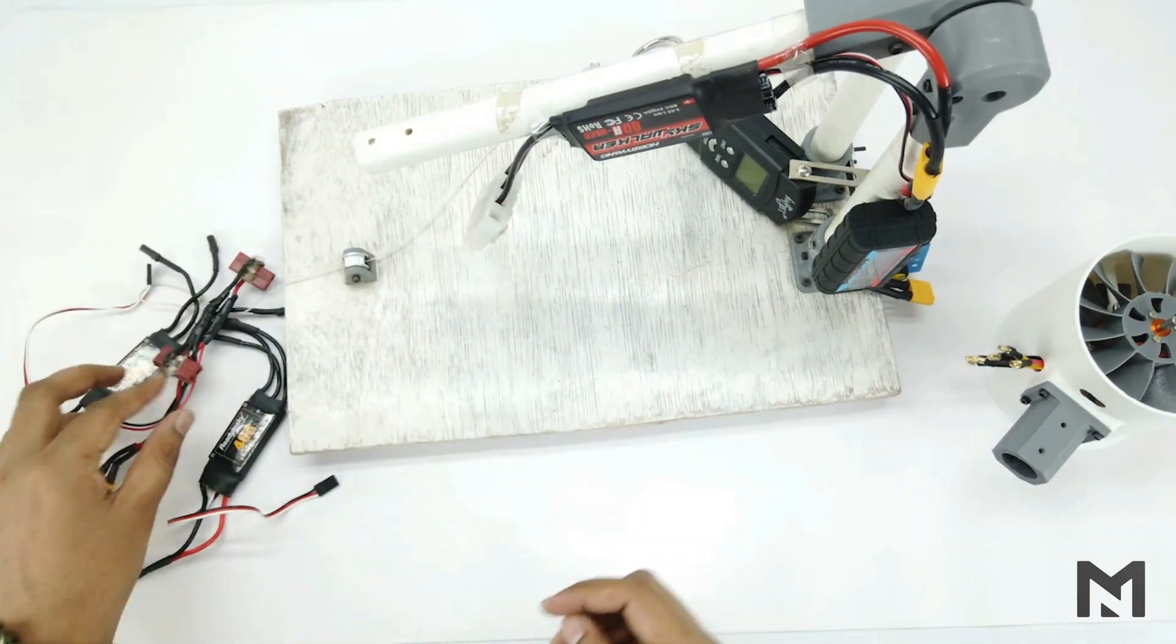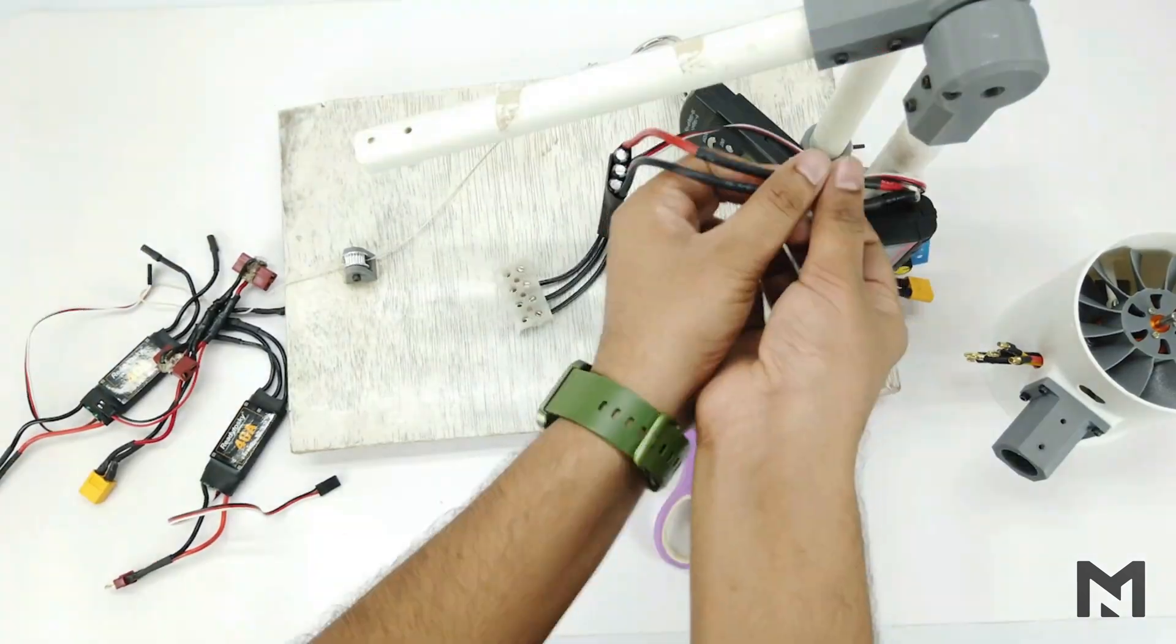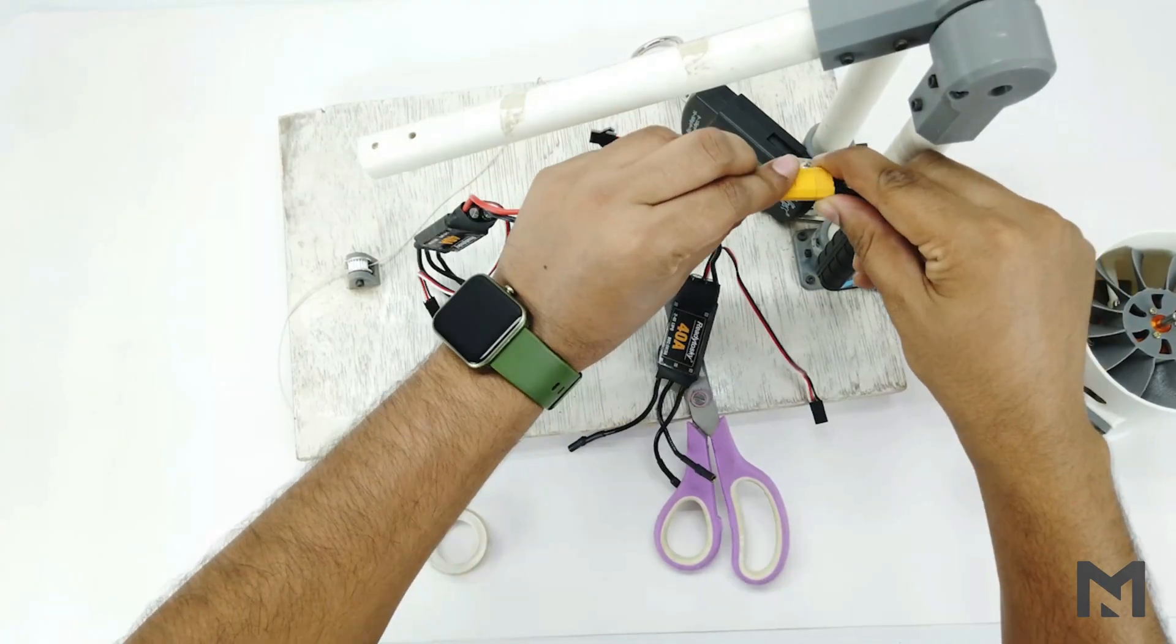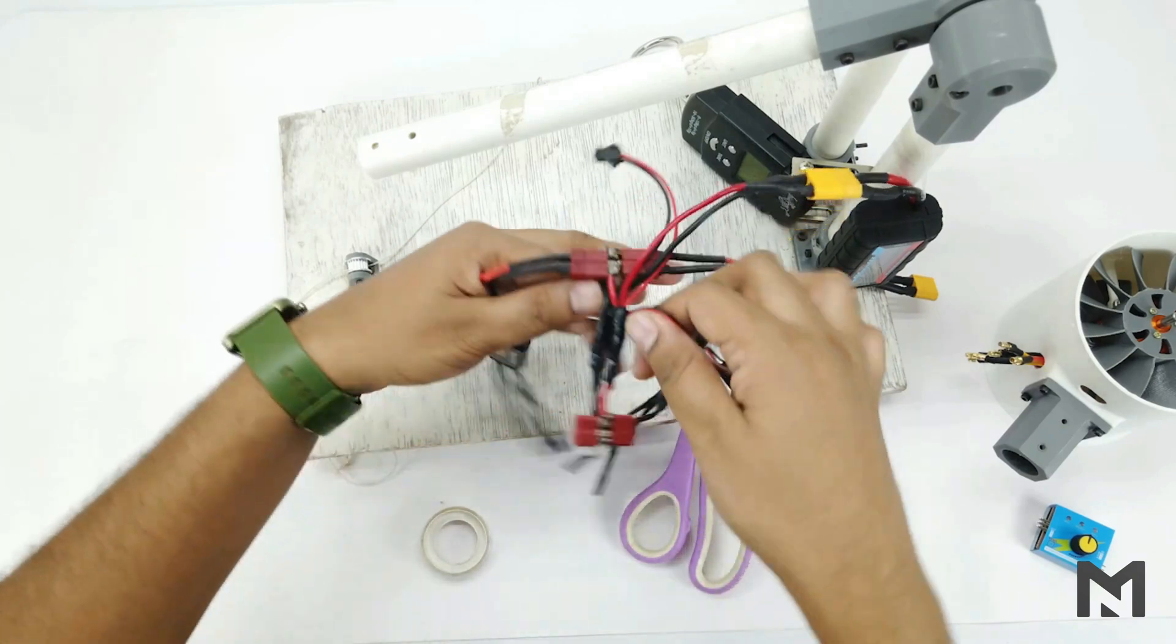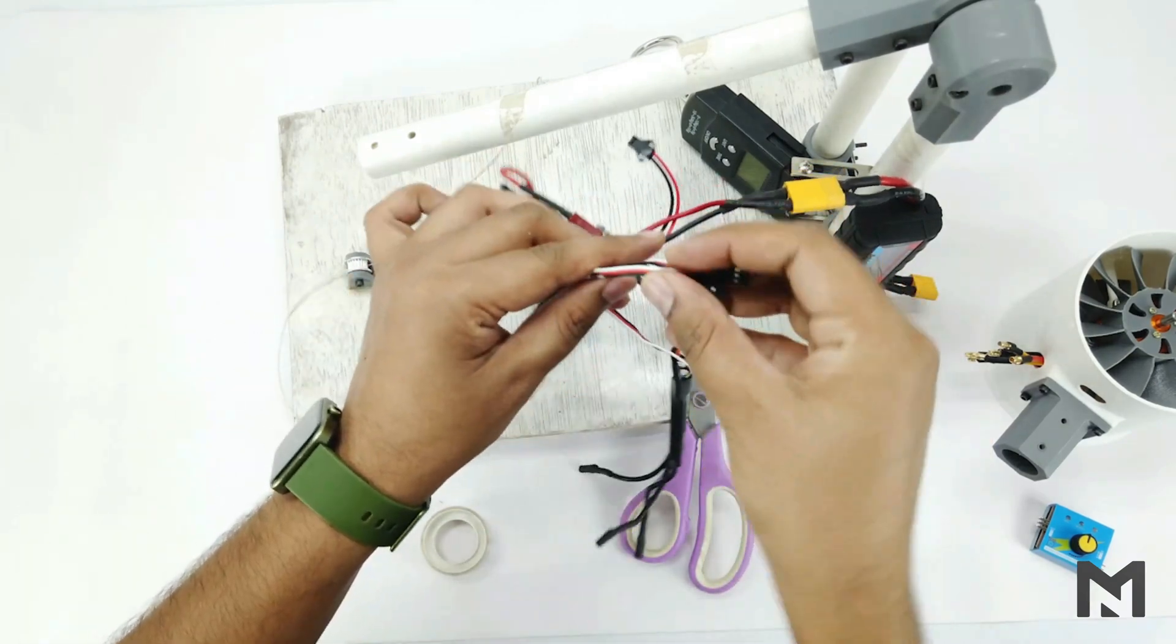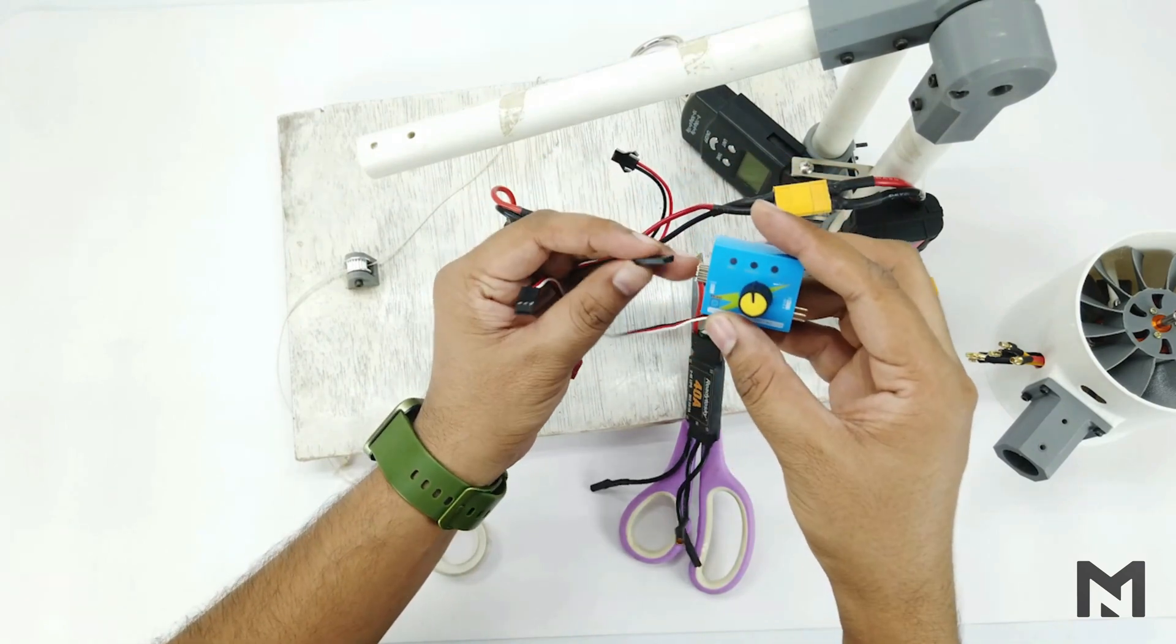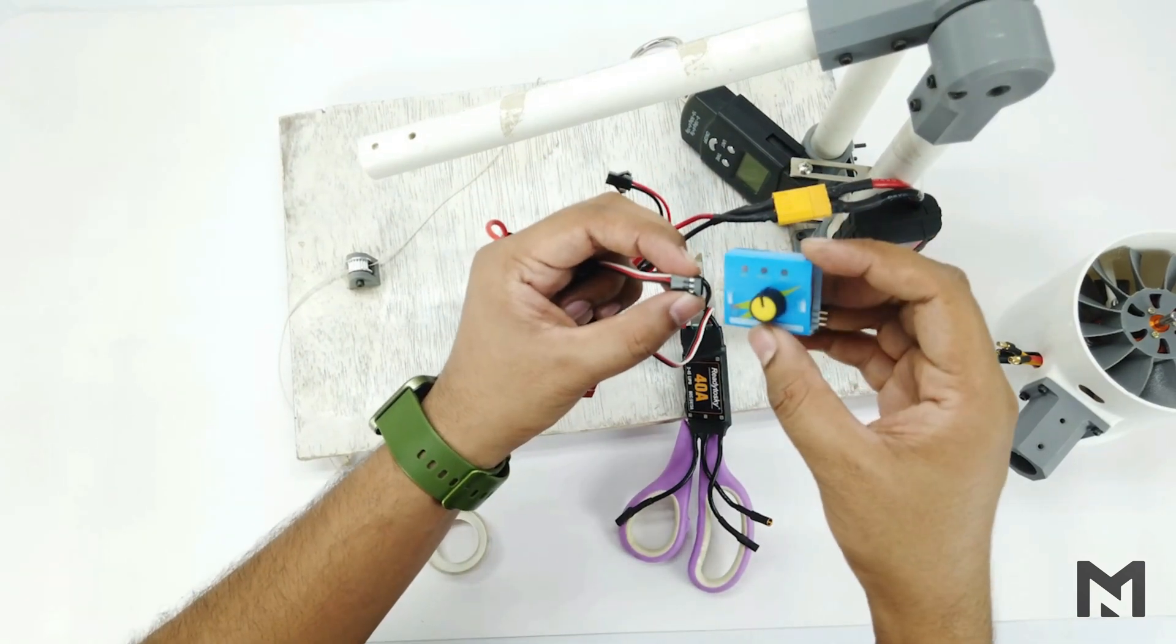And now I will connect them with this connector. The white wire is the signal. Now I will connect the wires of the ESC with the servo tester.